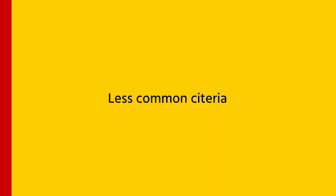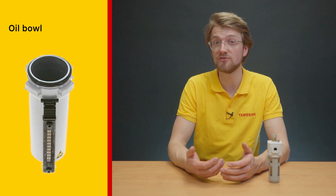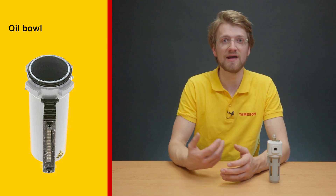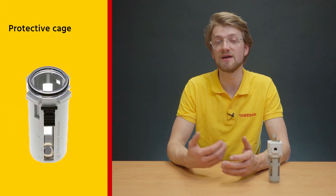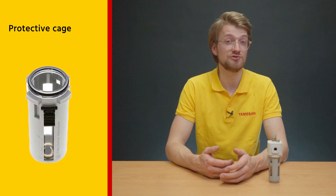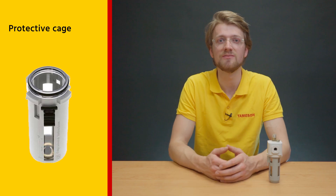Finally, let's take a look at a few less common selection criteria to consider based on your application. An oil bowl with an inspection tube allows for easy monitoring of the lubricant level and condition. Electronic level monitoring uses sensors to monitor the lubricant level and provides real-time feedback on the lubrication status. A protective cage protects the lubricator against external damage due to impact, vibrations, or other mechanical stress, which can be helpful in a harsh environment.